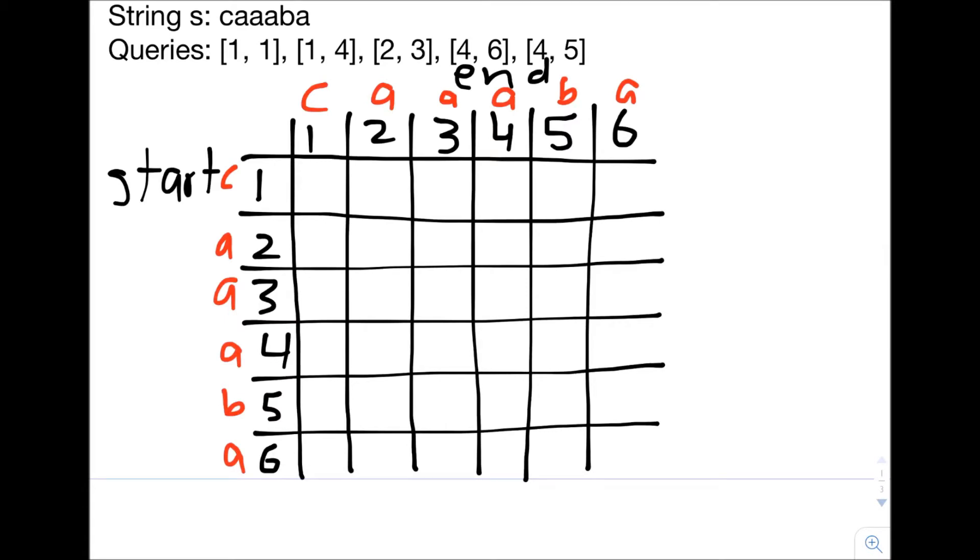The value of 1,1, which is the letter C, is a palindrome, so we put a 1. 1,2 CA is not a palindrome. CAA is also not, and the rest of these are also not palindromes.